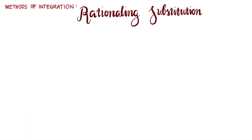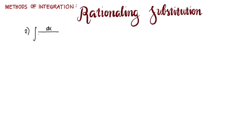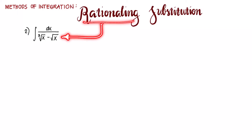In this video we solve another example showing us the method of integration called rationalizing substitution, otherwise called algebraic substitution. This is example number 2. We are to evaluate the integral of dx over the cube root of x minus the square root of x. It's called rationalizing substitution because we're given an irrational integrand and we are going to transform it into a rational form. As we can see here, we have two roots in the denominator — the cube root and the square root.